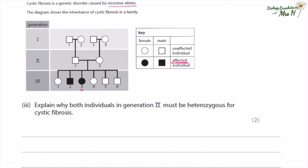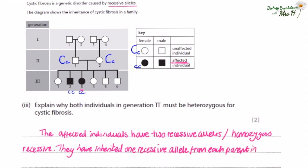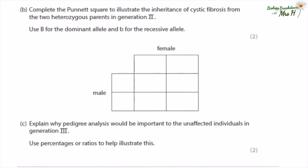Explain why both individuals in generation two must be heterozygous for cystic fibrosis. Even though they carry a recessive allele they don't have cystic fibrosis themselves — they are known as carriers. I find it helpful to write out the genotypes onto the diagram. Generation two individuals are Cc, and individuals two and three in generation three are cc. You can easily see that the affected individuals have two recessive alleles — they inherited one recessive allele from each parent.